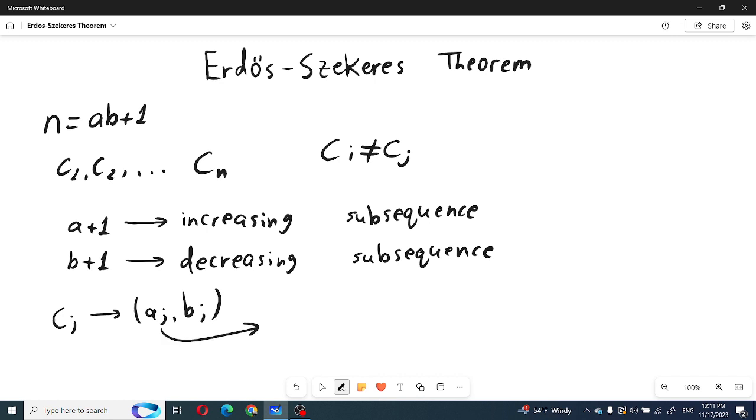The a_j means the largest increasing subsequence which ends at point j, and b_j means the largest decreasing subsequence which ends at point j.